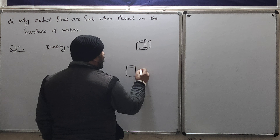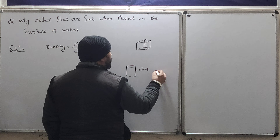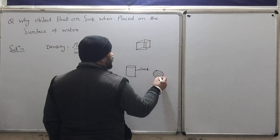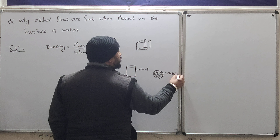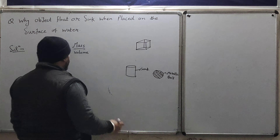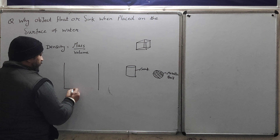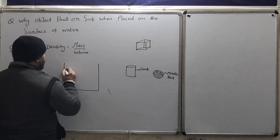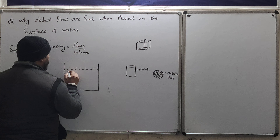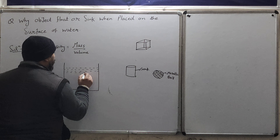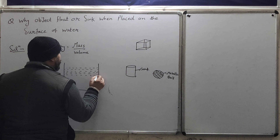If inside a small volume there is more mass present, then density is more. If inside a small volume less mass is present, then density is less. So remember: density is mass of a unit volume. If more mass is present in a small volume, density is more; if less mass is present, density is less. Now you need to understand one more thing: when you place any object on water, you will observe that either the object will float on the water's surface, or it will sink.